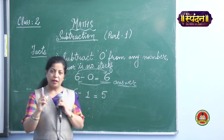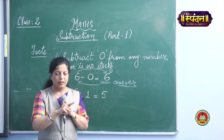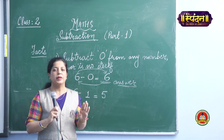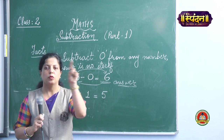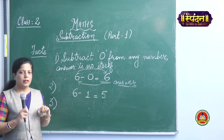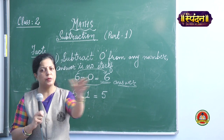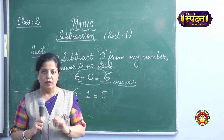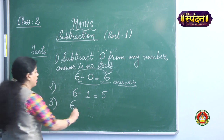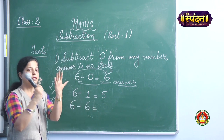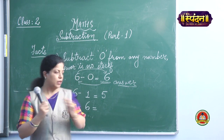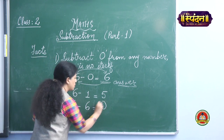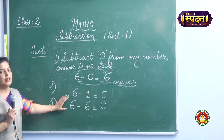The third rule is: whenever you subtract the same number from the number itself, always remember my dear girls, your answer will be 0. Suppose I have those 6 ice creams again, but I have distributed them — I have taken away all 6 ice creams and distributed them amongst 6 girls. 6 ice creams were there, but I have taken away 6. Will there be any ice cream left? No. If there is no ice cream, my answer will be 0. So these 3 rules we need to keep in our mind while subtracting.